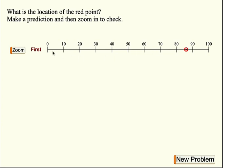So in order to check that, I'm going to press this zoom button, and when I do, this interval between 80 and 90 is going to appear below this number line. And it's going to expand, so I get a much better sense of the location of this point. Let's watch.